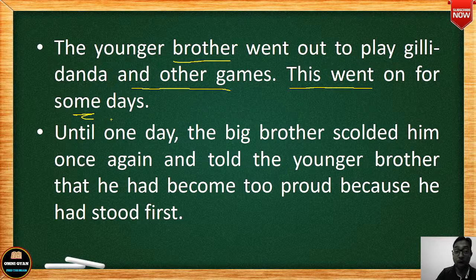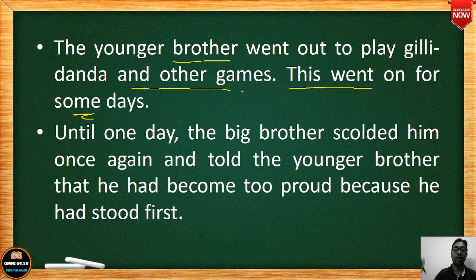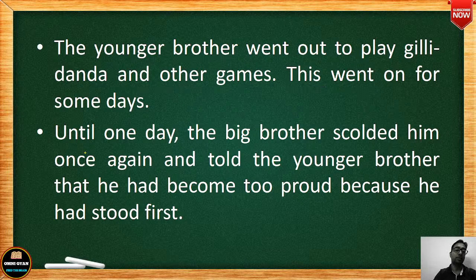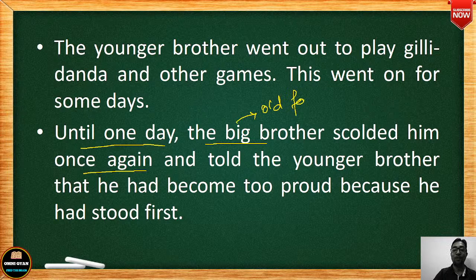For some days the big brother did not scold the younger brother because he was too depressed by his own failure. He let the younger brother come and go freely. But eventually, one day, the big brother returned to his old form and started scolding again.